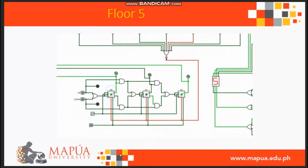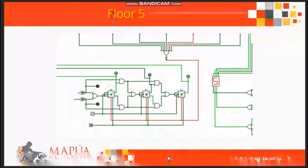The display will show the number 4 if the output is 100, which indicates the fourth floor. The outputs of the flip-flop must be 101 to display the number 5, which indicates the fifth floor.